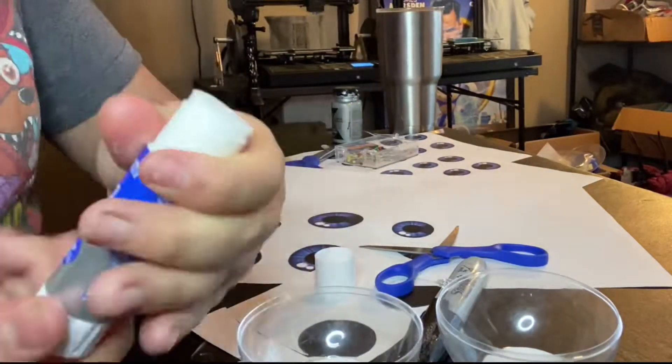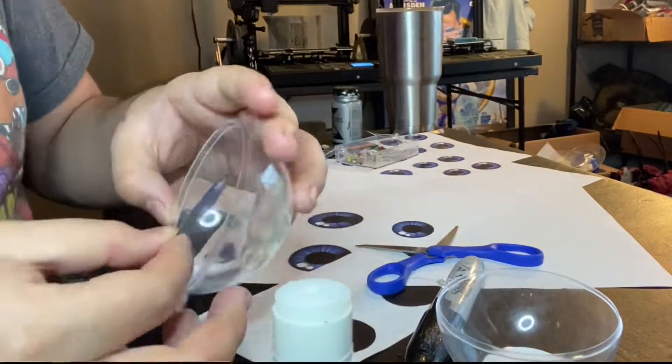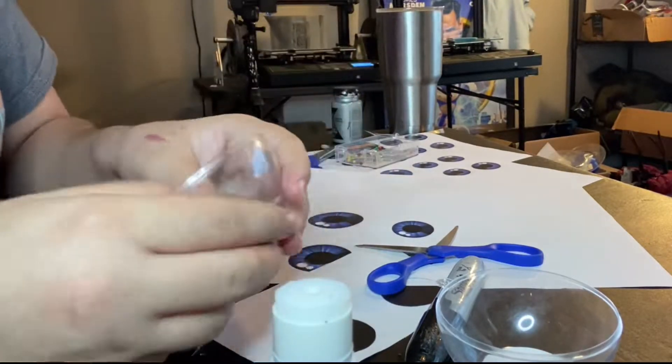To attach them, I just use a glue stick I had around. You don't want to go too crazy with the glue though, because then you'll start seeing stains on the actual pupil.